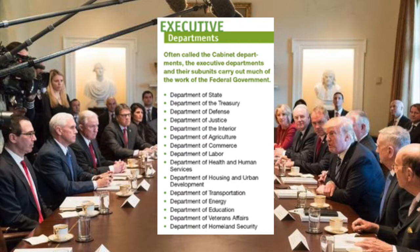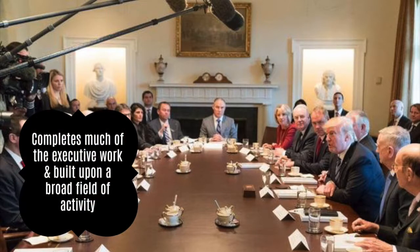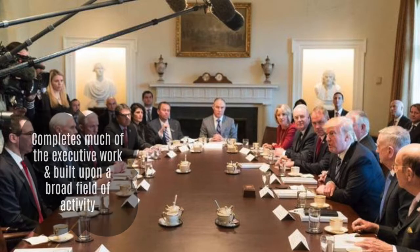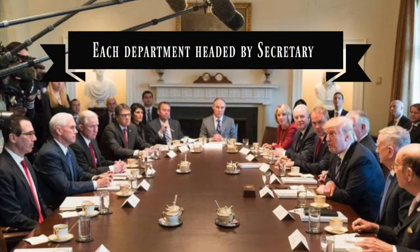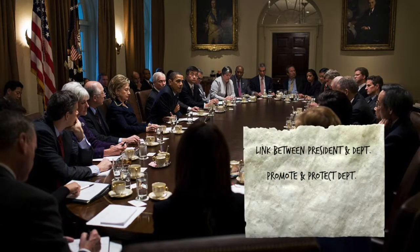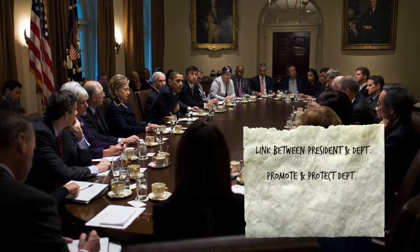Much of the work of the federal government is done by the 15 executive departments, often called the cabinet departments. They employ nearly two-thirds of the federal government's civilian workforce. They are the traditional units of federal administration, each built around some broad field of activity. Each department is headed by a secretary, except for the Department of Justice, whose work is directed by the Attorney General. Those department heads serve in the president's cabinet, and their duties as chief officers take up most of their time.